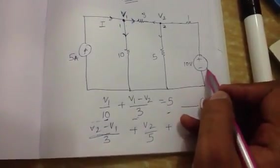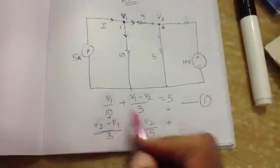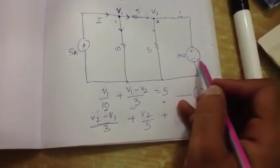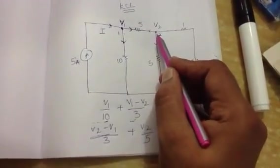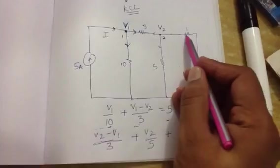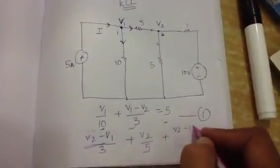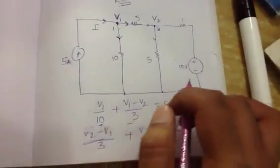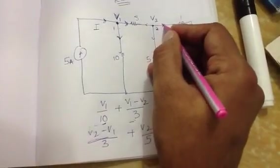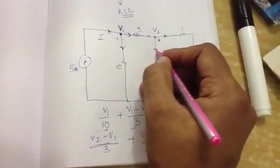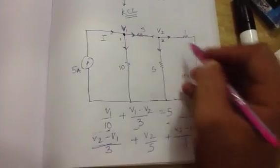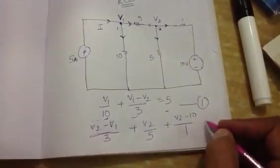this is a voltage. It's not a current. So this is a current, you have equated it. This is a voltage. So you can take it directly as V2 minus 10 by this resistance 1. V2 minus 10 by 1. Because there is no current source, we can take it. This is an outgoing current. V2 minus 10 by 1 is equal to 0.